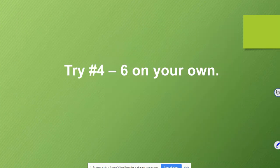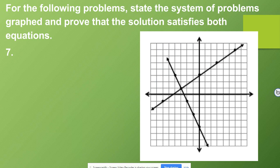You're going to be on your own trying numbers 4 through 6. Then you're going to come back to the video to try the last two with me. For the last two, I'm going to do number 7 with you and you're going to do number 8 on your own. We have to state the system of the problems graphed and prove that the solution satisfies both equations.